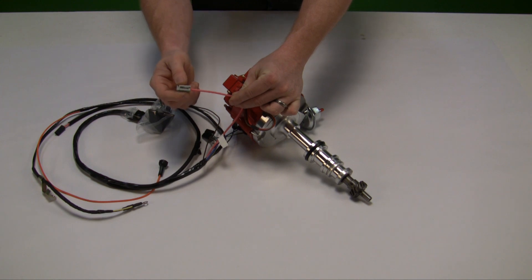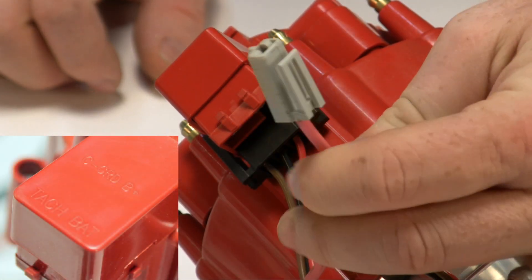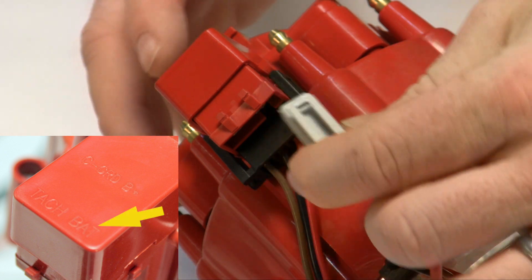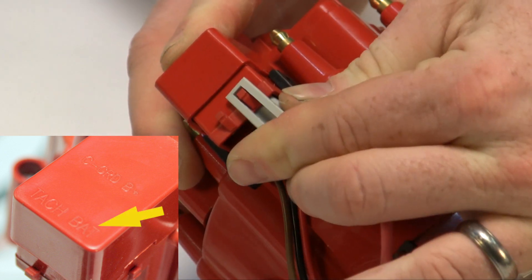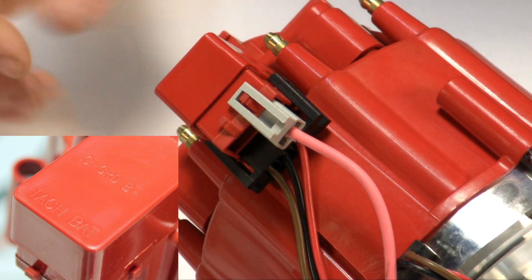Sometimes it could be doubled up - pink with a yellow wire or pink with another pink wire. This plugs into the side of the cap in the BAT location. It locks in.